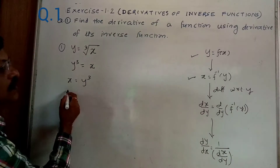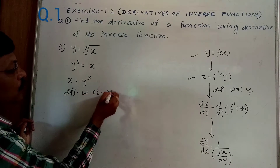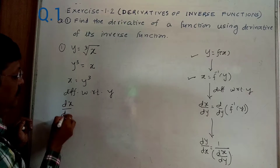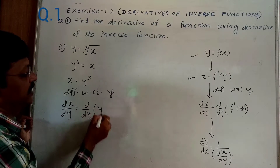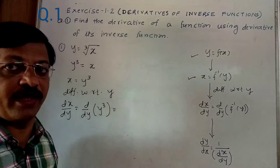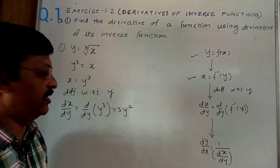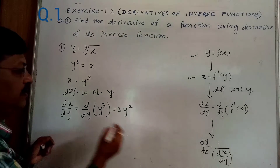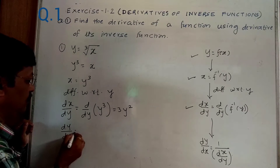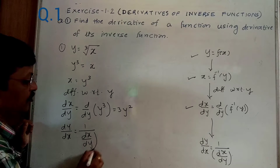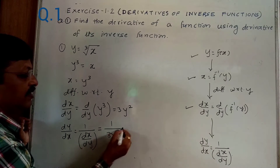Now differentiate x = y³ with respect to y. This gives dx/dy = d/dy of y³. Just like d/dx of x³ is 3x², d/dy of y³ is 3y². So dx/dy = 3y². Now use the rule dy/dx = 1 upon dx/dy, which is 1 upon 3y².